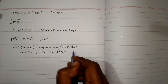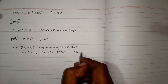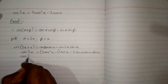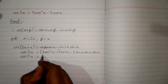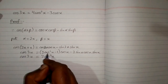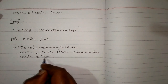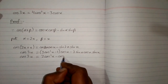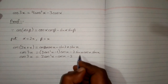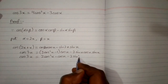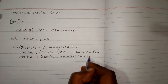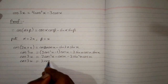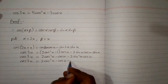And in place of sin 2x we can put 2 sin x cos x, multiplied by sin x. So cos 3x is equal to 2cos³x — because 2cos²x multiplied by cos x is 2cos³x — and cos x multiplied by minus 1 is minus cos x. Then sin x multiplied by sin x is sin²x, multiplied by cos x.